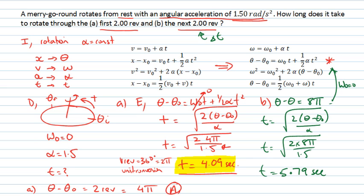So the answer for part B is really going to be that 5.79, the time to go around four times, minus 4.09, the time to go around the initial two times, which gives me 1.70 seconds.